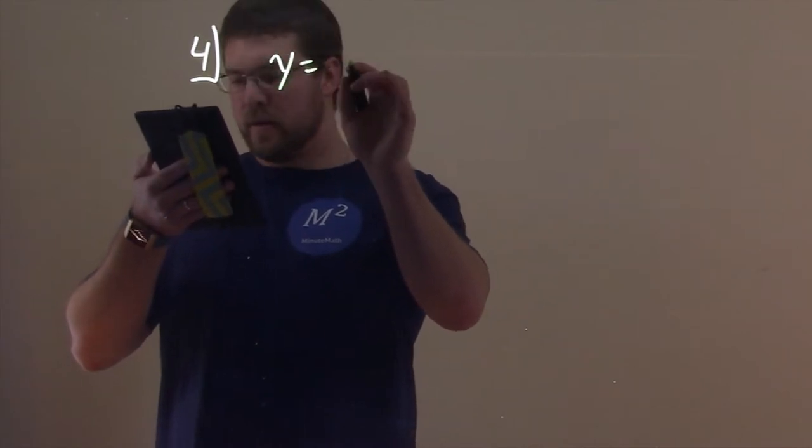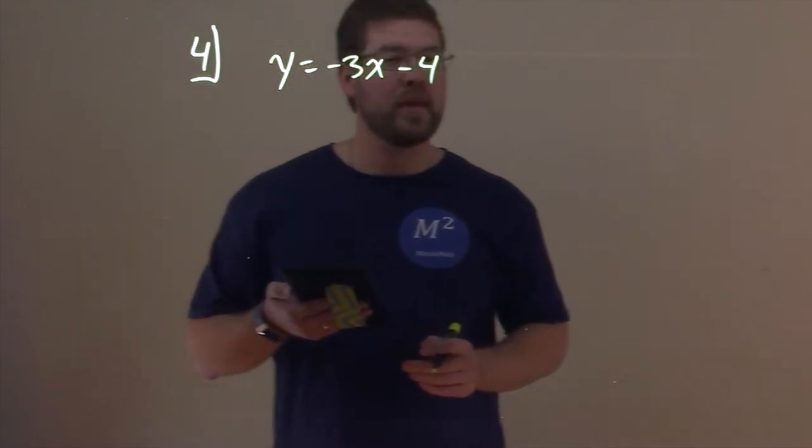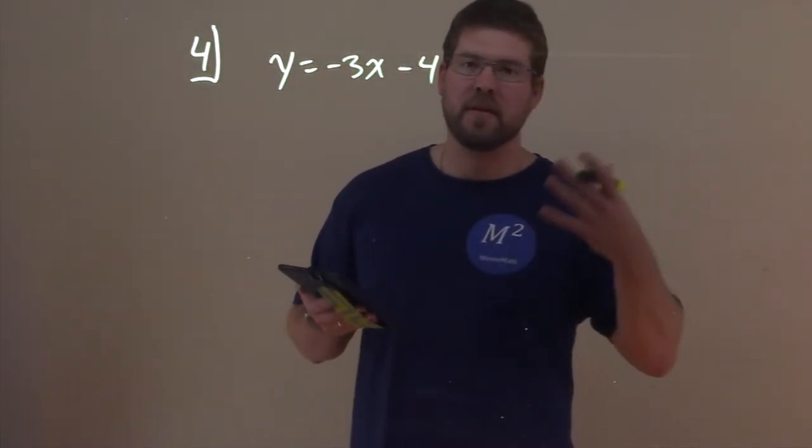We're given y equals negative 3x minus 4. So, we want to find the intercepts there, and then sketch the graph using those intercepts.